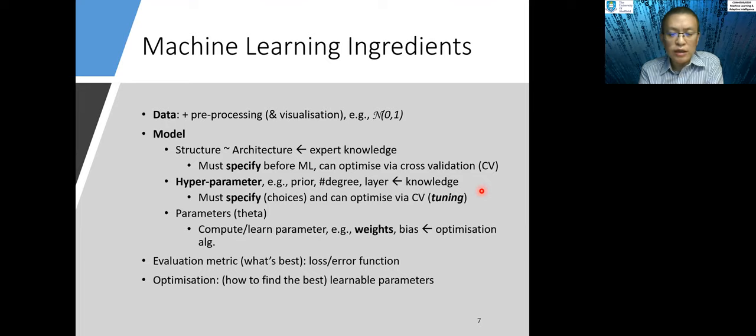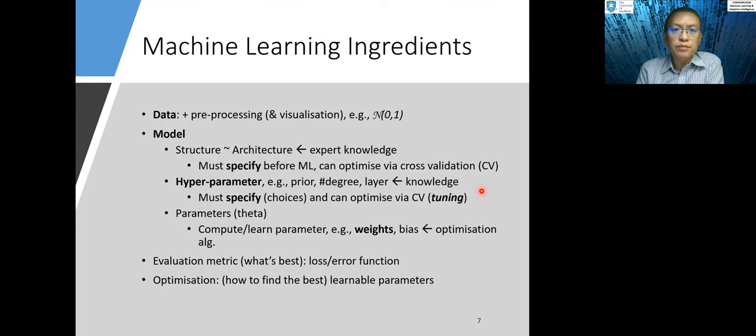Another very important issue in machine learning is reproducibility. And this is very important to build trustworthy systems. In science, in scientific research, reproducibility is a crisis. And it's very important to be able to reproduce research outcome. And it's very important for products to produce consistent output.